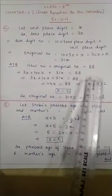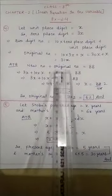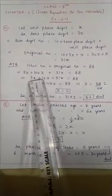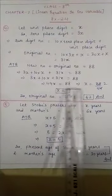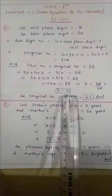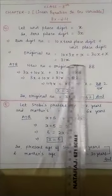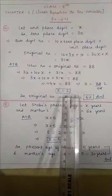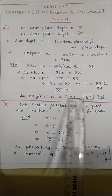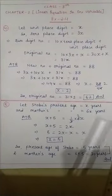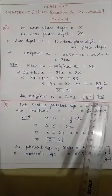So we get: 3x + 10x + 31x = 88. All these terms solved give 44x = 88, so x = 2. Now to find the original number: 31x = 31 × 2 = 62. So the original two digit number was 62.